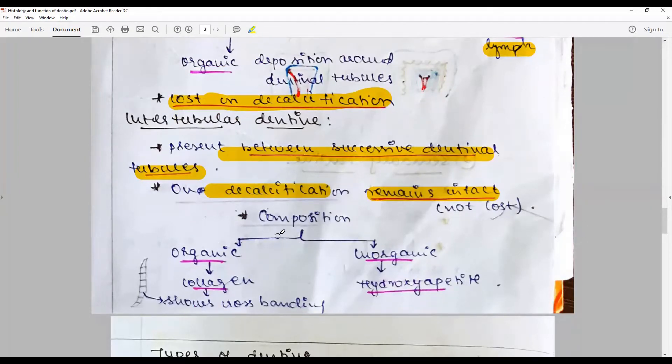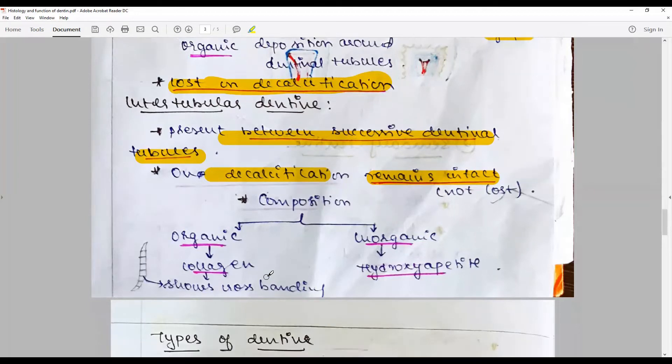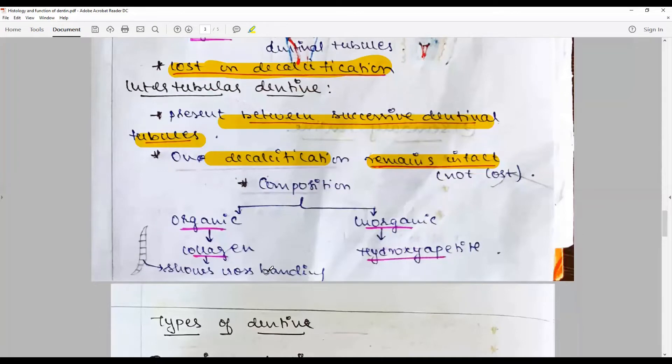The composition: we have an organic component of dentin and inorganic component. 65 percent is calcium hydroxyapatite crystals appearing in the form of calcium phosphate with traces of magnesium salts and carbonates. The organic is collagenous and non-collagenous, with collagen showing typical 64 angstrom cross-banding.